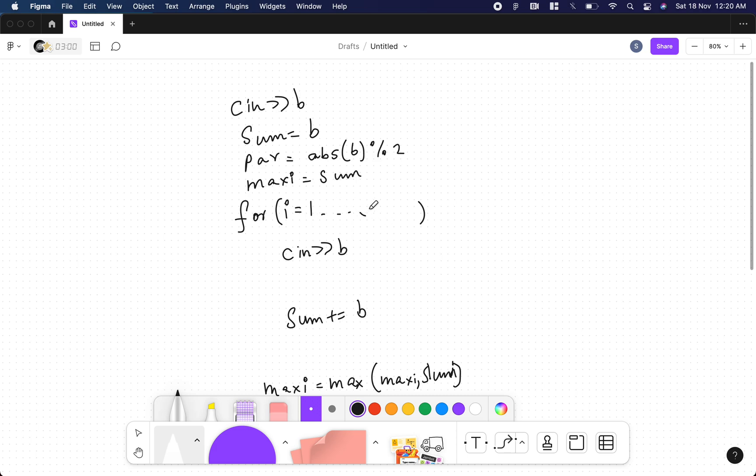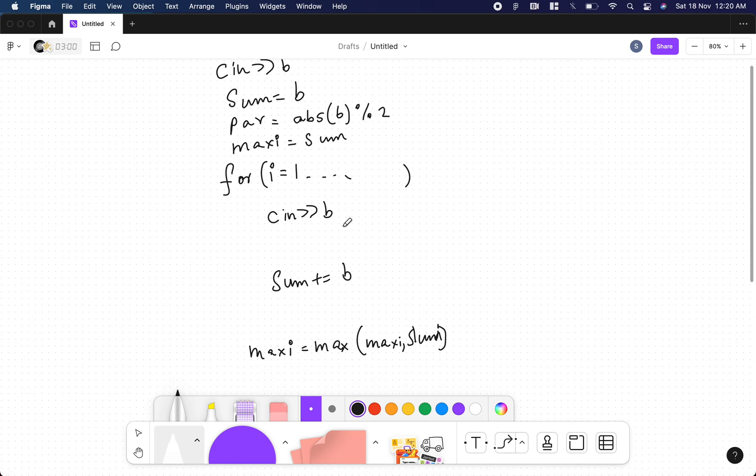Now we'll iterate through the second element to the last. We already made sure the code is ready. When can we add the sum? If the adjacent parity is different. So we check the current parity. Current parity, what is that? Absolute value of b mod 2 is not equal to the previous number's parity. That is this variable, par. If this is possible, then we do sum plus equal to b.